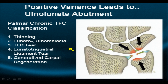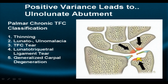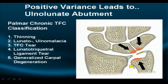Positive variance leads to ulnolunate abutment. This diagram demonstrates some of the manifestations of ulnolunate abutment, synonymous with ulnolunate impingement syndrome. You're probably wondering why the ulna is not protruding distally to the radius even though the patient has abutment syndrome — because this is a dynamic phenomenon that may occur in supination, pronation, radial deviation, ulnar deviation, or clenching of the fist. So in the neutral position you may not even see the positive variance that contributes to this syndrome.